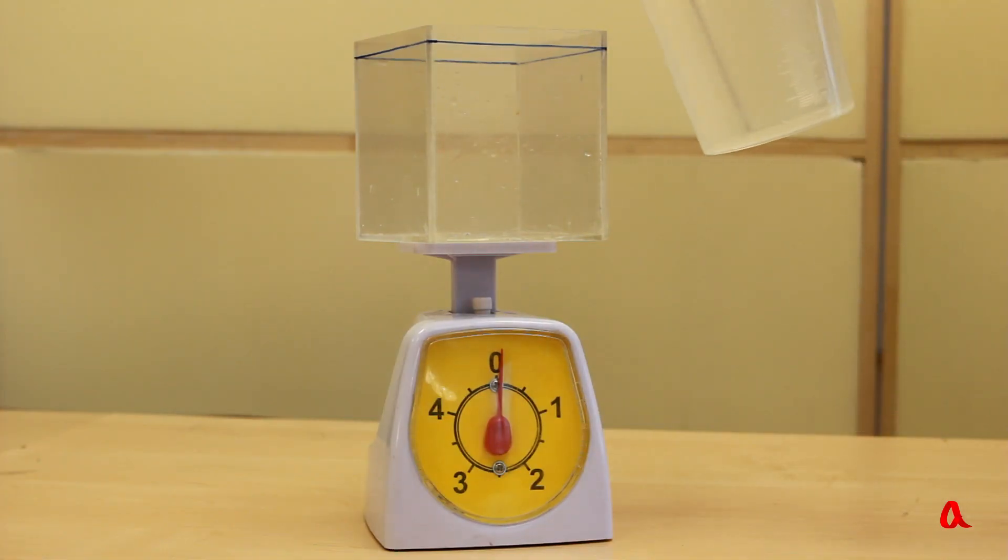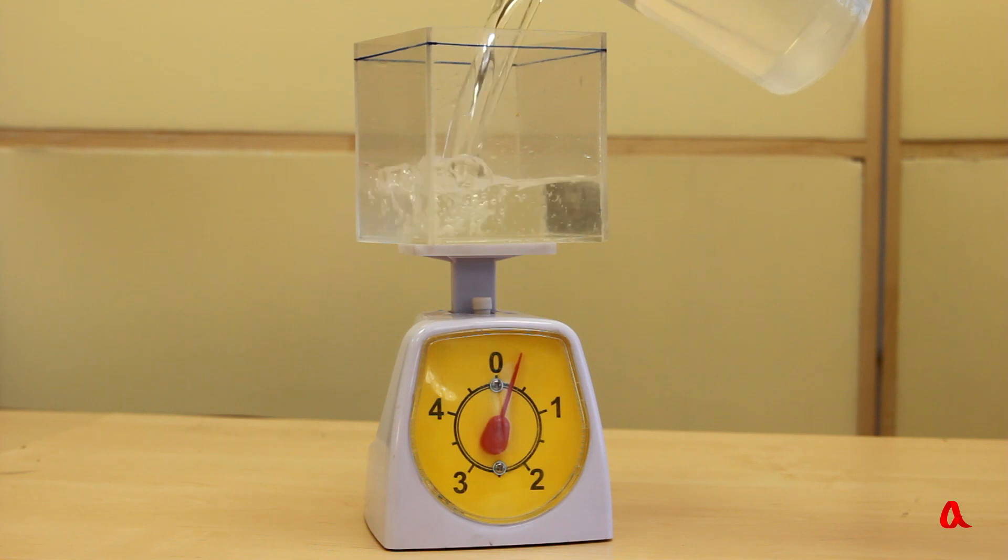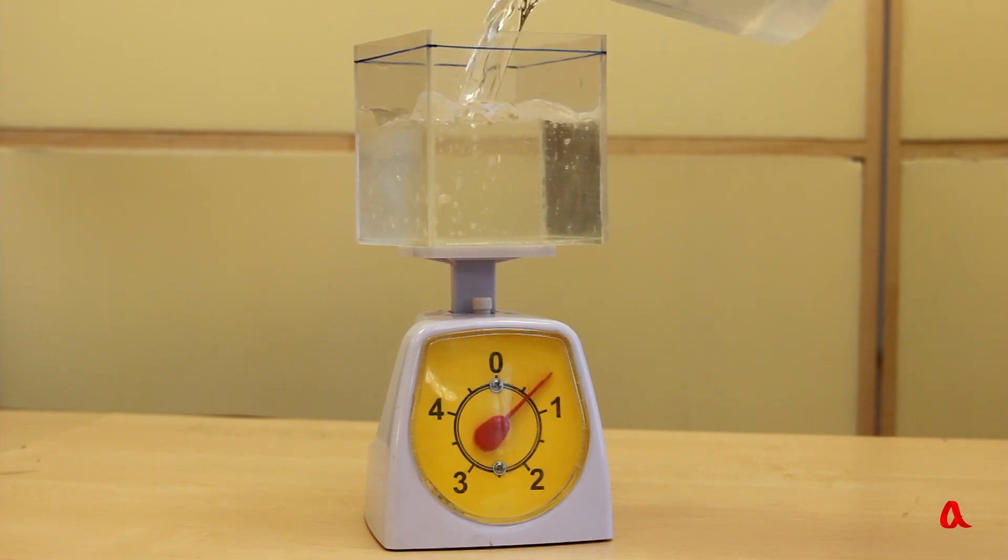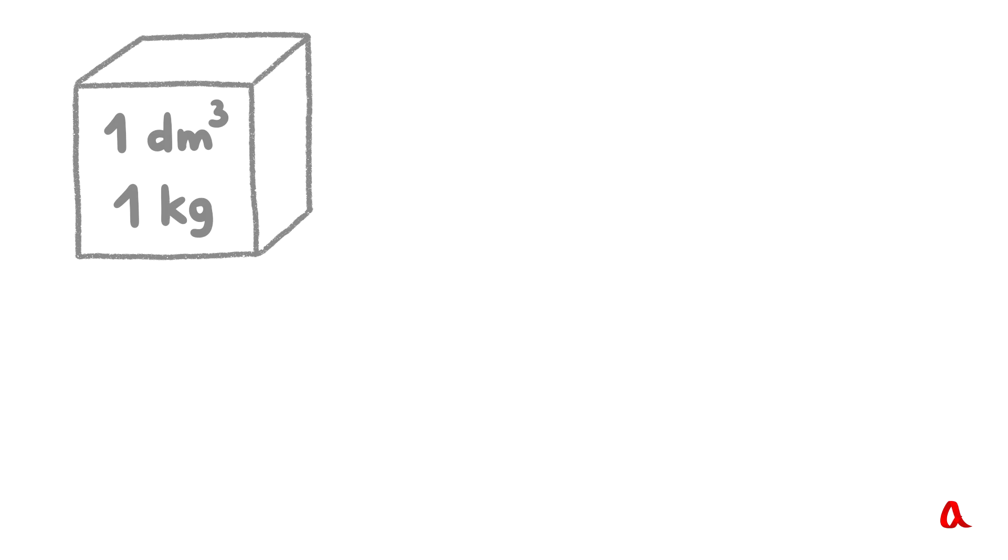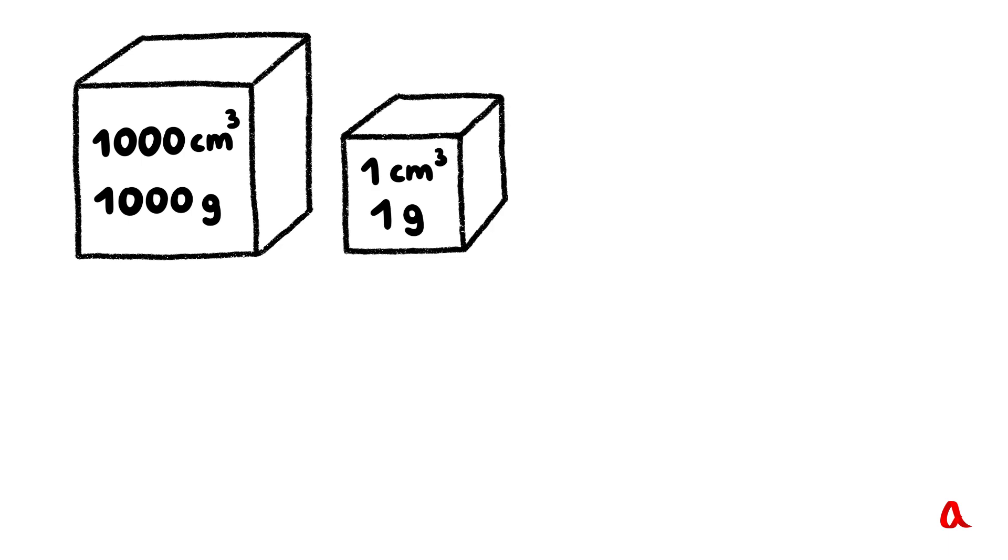Let us take a 1 liter vessel. We can see that 1 cubic decimeter of water weighs exactly 1 kg. 1 cubic decimeter is 1,000 cubic centimeters. Water's mass in this volume is 1,000 grams. So the mass of 1 cubic centimeter of water is 1 gram. Thus we can say that the density of water is 1 gram per cubic centimeter.